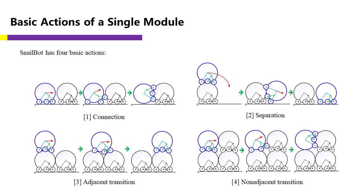In order to realize self-assembly and self-reconfiguration, a single modular robot needs to be able to autonomously attach to or detach from its peers. The ability to move over other modules is also indispensable. We defined four basic actions for a single robot, including connection, separation, adjacent transition, and non-adjacent transition.